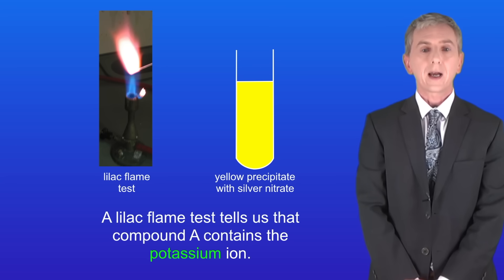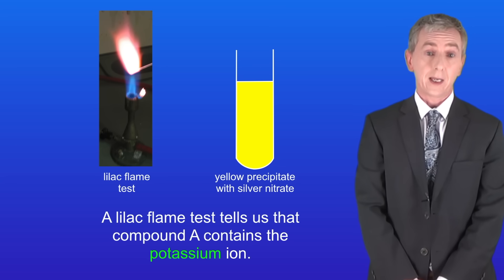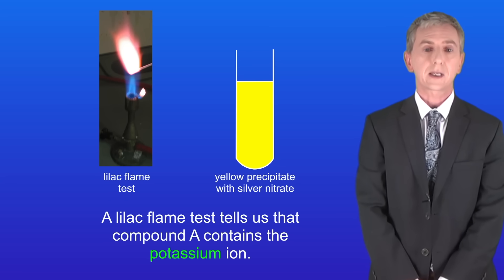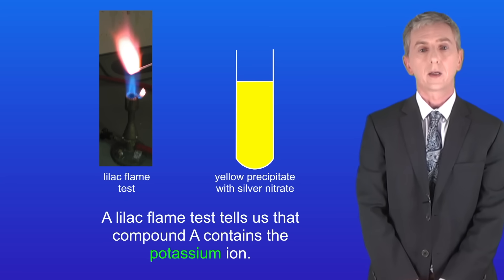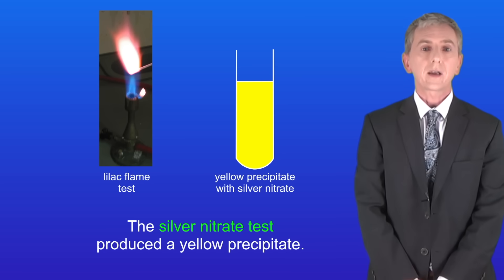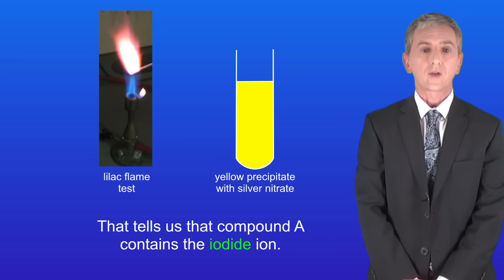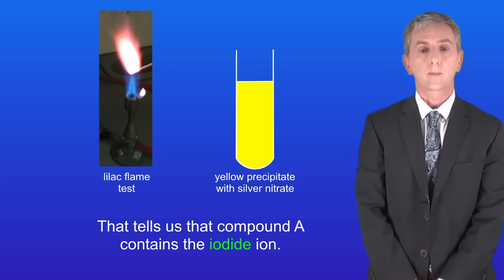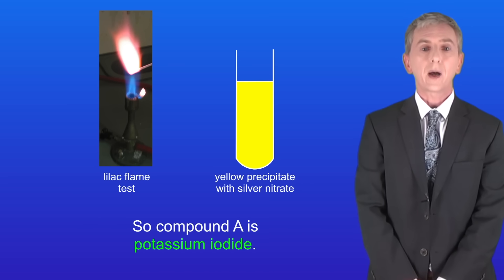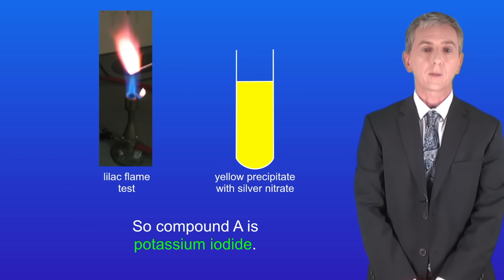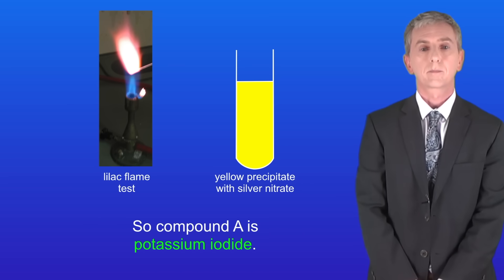A lilac flame test tells us that compound A contains the potassium ion. The silver nitrate test produced a yellow precipitate, and that tells us that compound A contains the iodide ion. So compound A is potassium iodide.